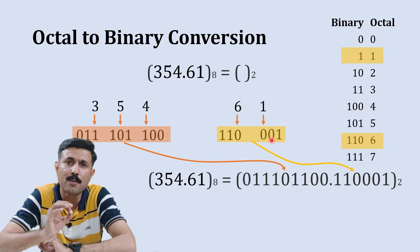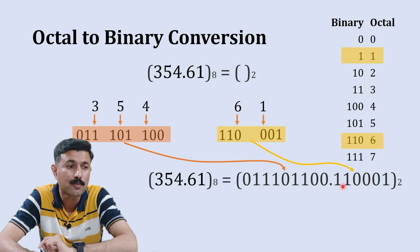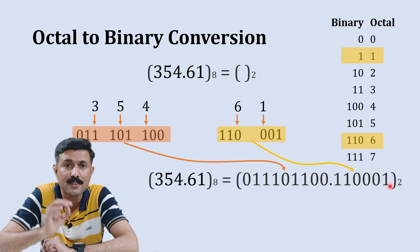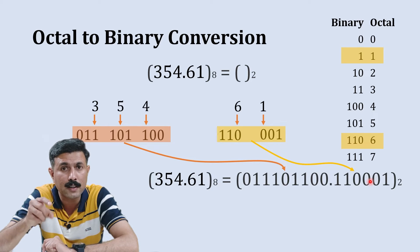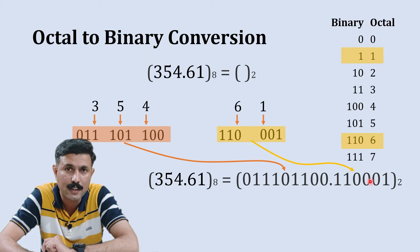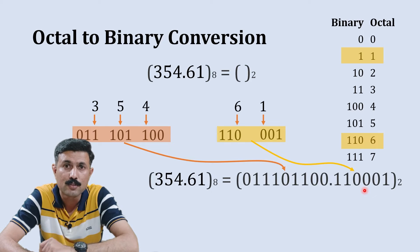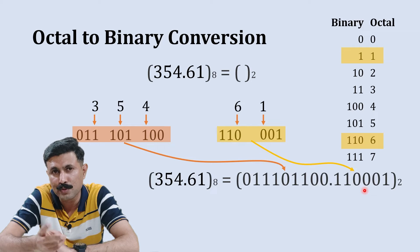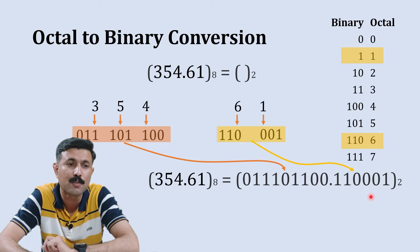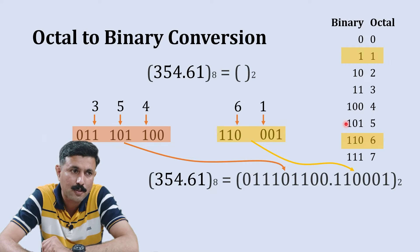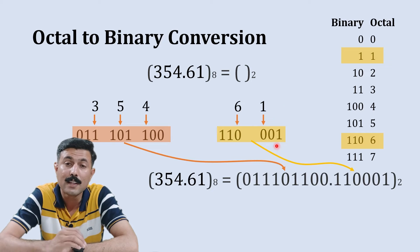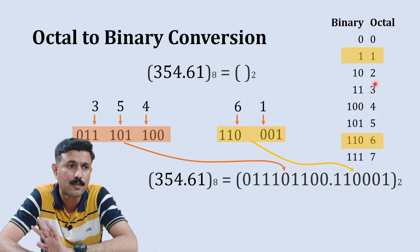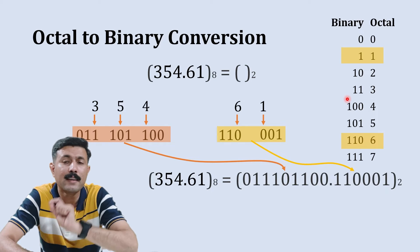I'll tell you the problem if you just write 1 instead of 001. The binary equivalent to this number should be 110001 on the fractional side. But if you write just 1 instead of 001, the binary becomes 1101. When you convert 1101 back to octal: 110 is 6 and 1 alone — adding two zeros at the end gives 100, which is octal 4. So instead of 6.1 you'd get 6.4, which is the wrong answer. That is why you must write 001 instead of just 1.